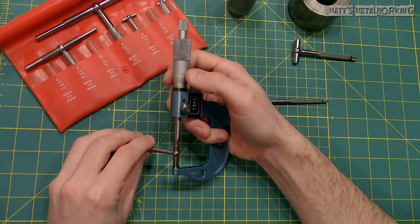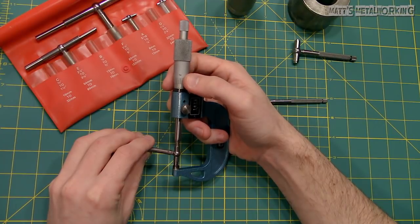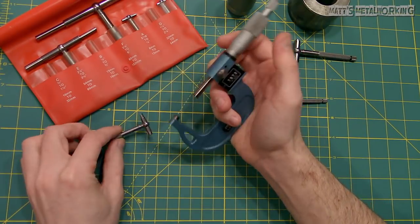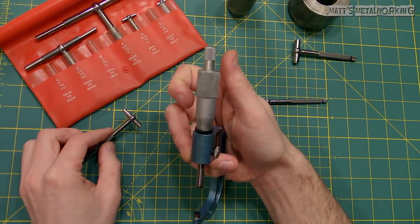Wiggle the gauge between the two measuring surfaces of the micrometer. Finally adjust the thimble and then take the reading. We have 1.0725.